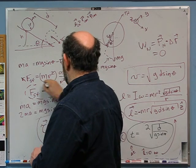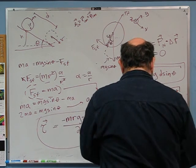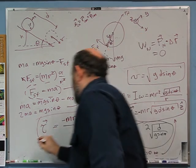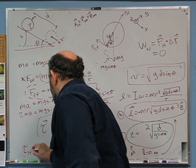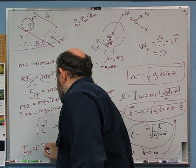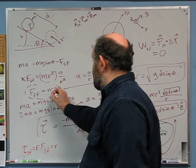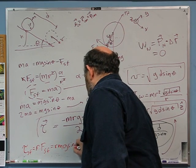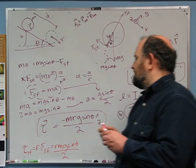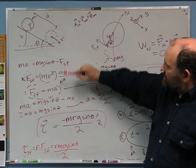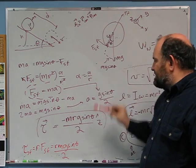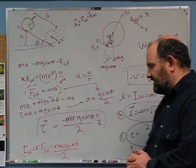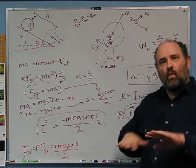Now that I know a, f_sf equals ma equals m times g sin theta over 2. The torque of static friction is r times f_sf, which gives mr times g sin theta over 2. That's the same answer. So if you start by thinking about angular accelerations and F equals ma, you get the same torque as from energy and angular momentum. There are multiple paths to the same answer. That's the second problem.